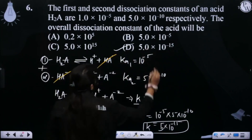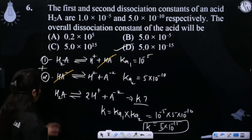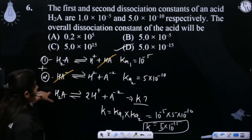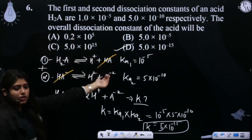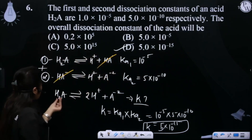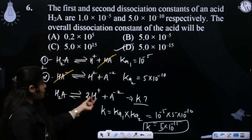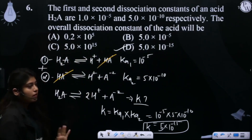The answer is option B: 5 × 10⁻¹⁵. We wrote the two stepwise reactions and added them to get the overall dissociation. H₂A loses both H⁺ ions in one overall step, so we add the two Ka values by multiplying them.